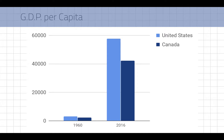It can be good to show GDP per capita over time as well, because it gives you a sense of how much more things cost these days. The US does have quite a bit of an edge in terms of GDP per capita compared to Canada in recent years.